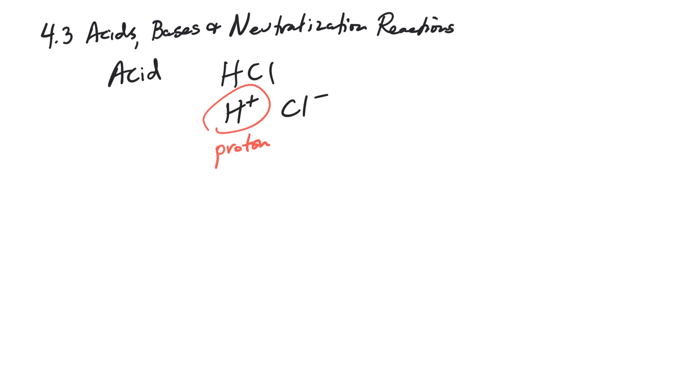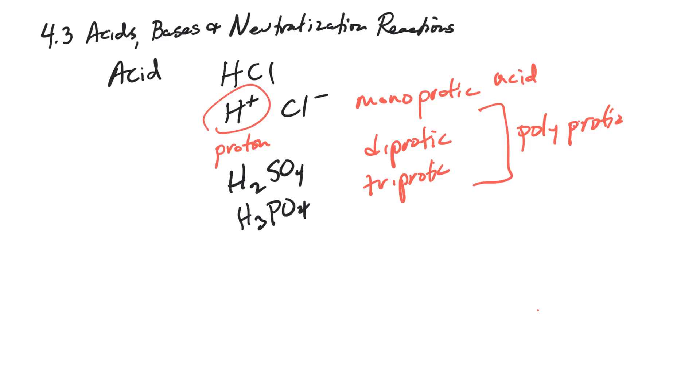So if you have an acid that can give one proton, then this is called a monoprotic. Protic is from proton. Mono means one. Monoprotic acid. If you have something like this, H2SO4, which is sulfuric acid, this is a diprotic acid. And if you have something like H3PO4, which is phosphoric acid, this is called a triprotic acid. And anything bigger than one is called poly. So polyprotic means it has more than one hydrogen to give. So a hydrogen donor would be an acid. So donates a proton.